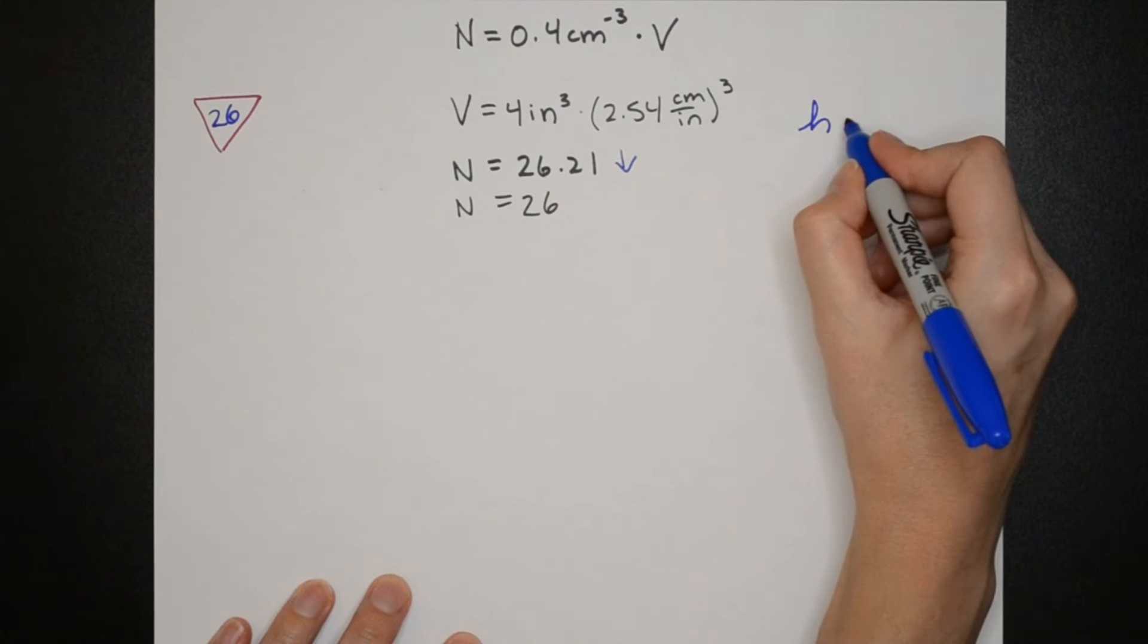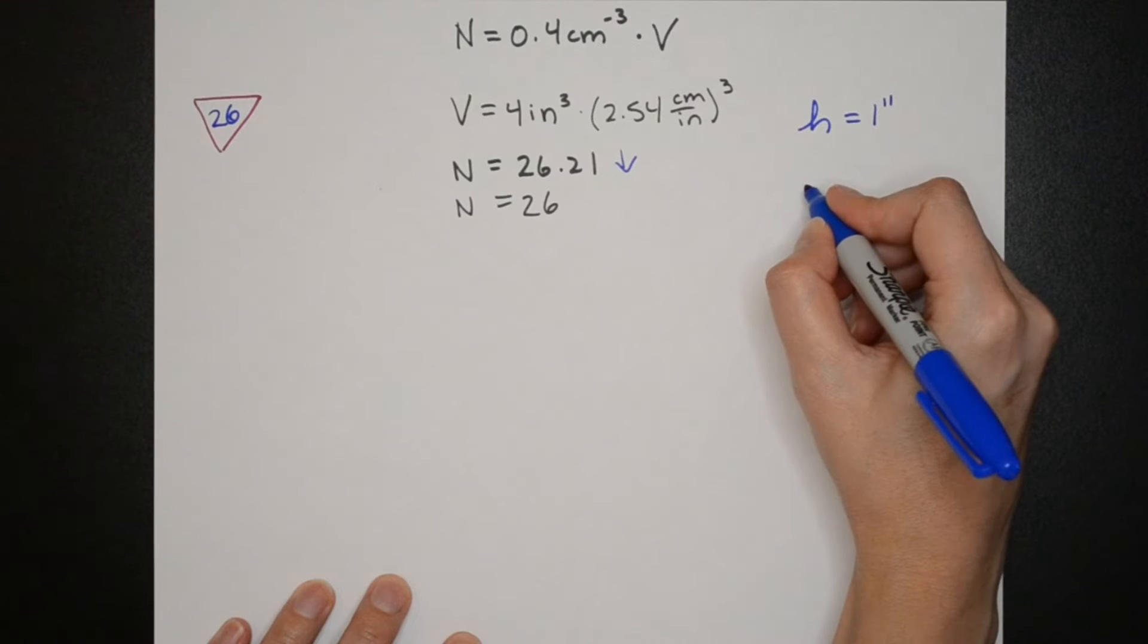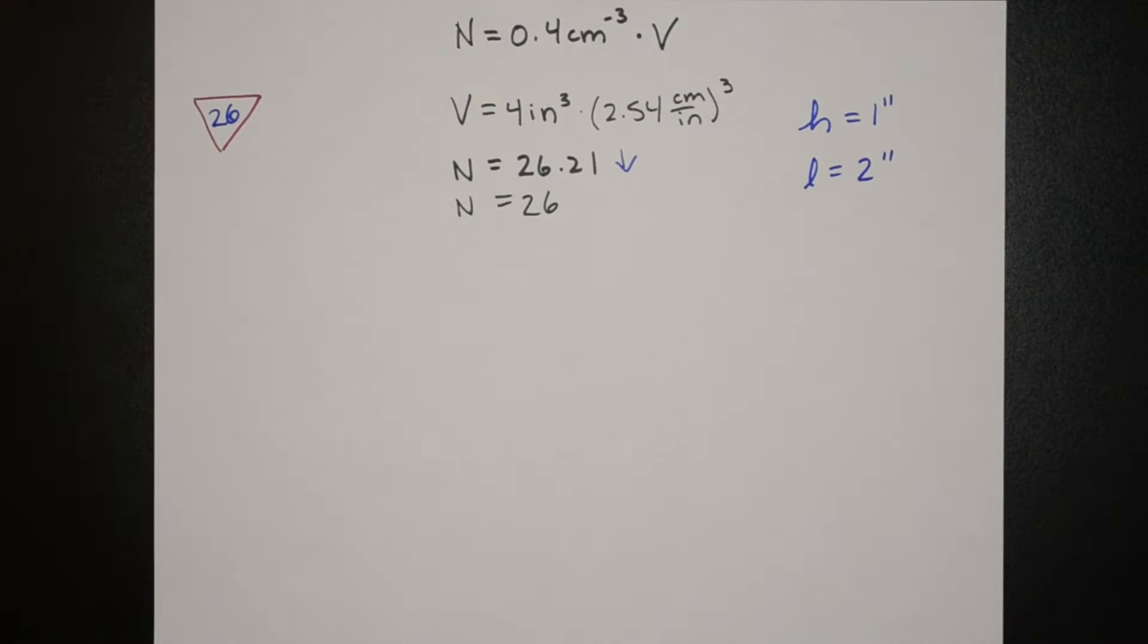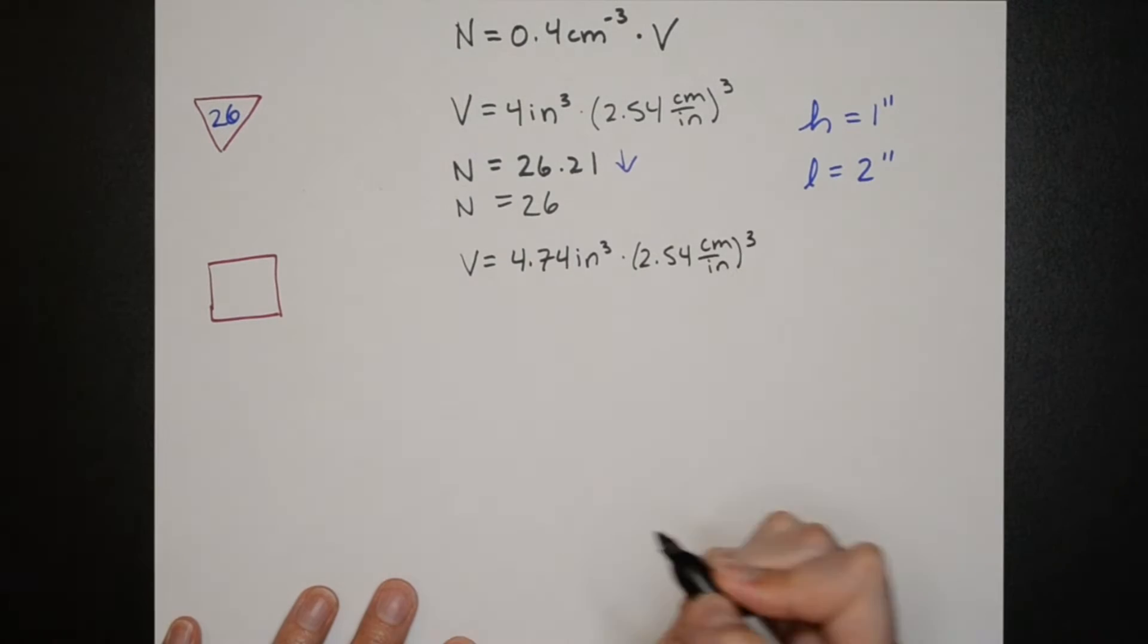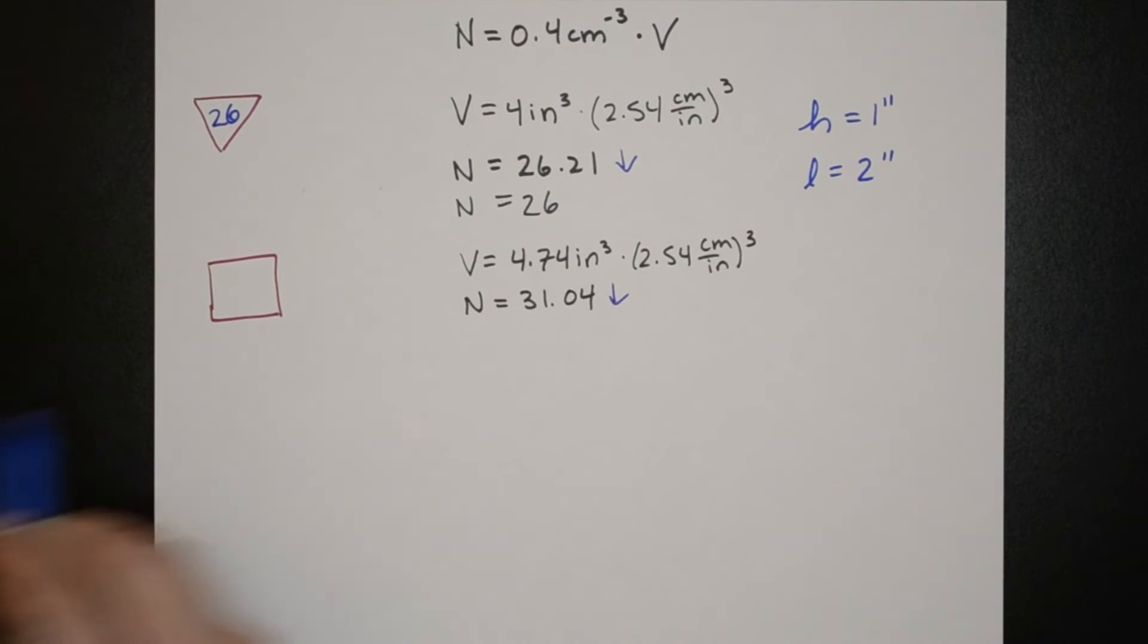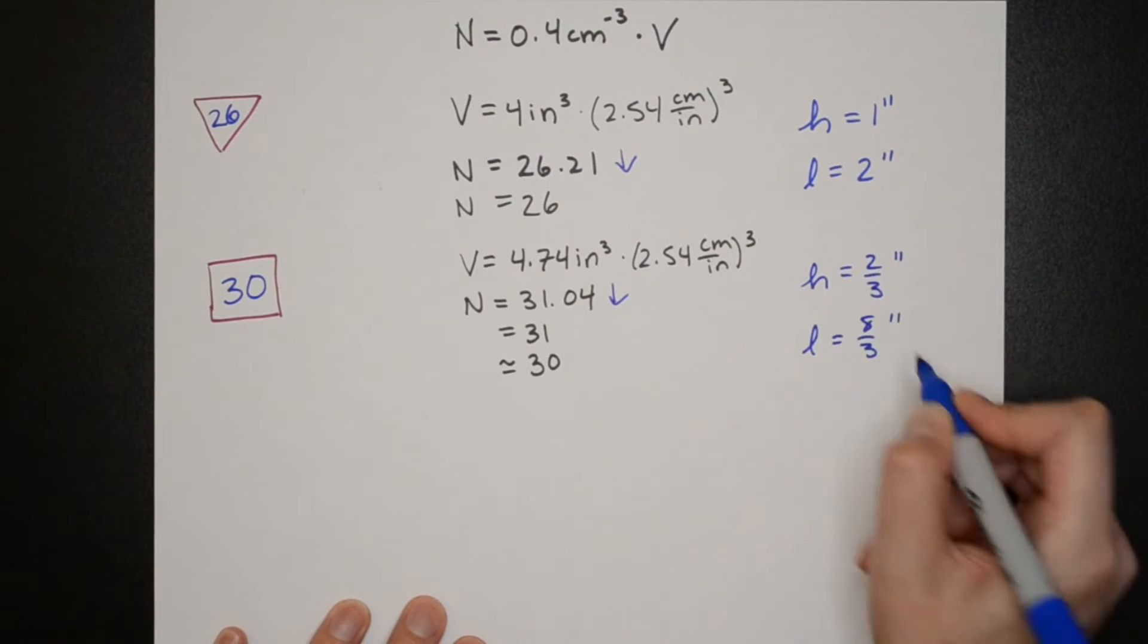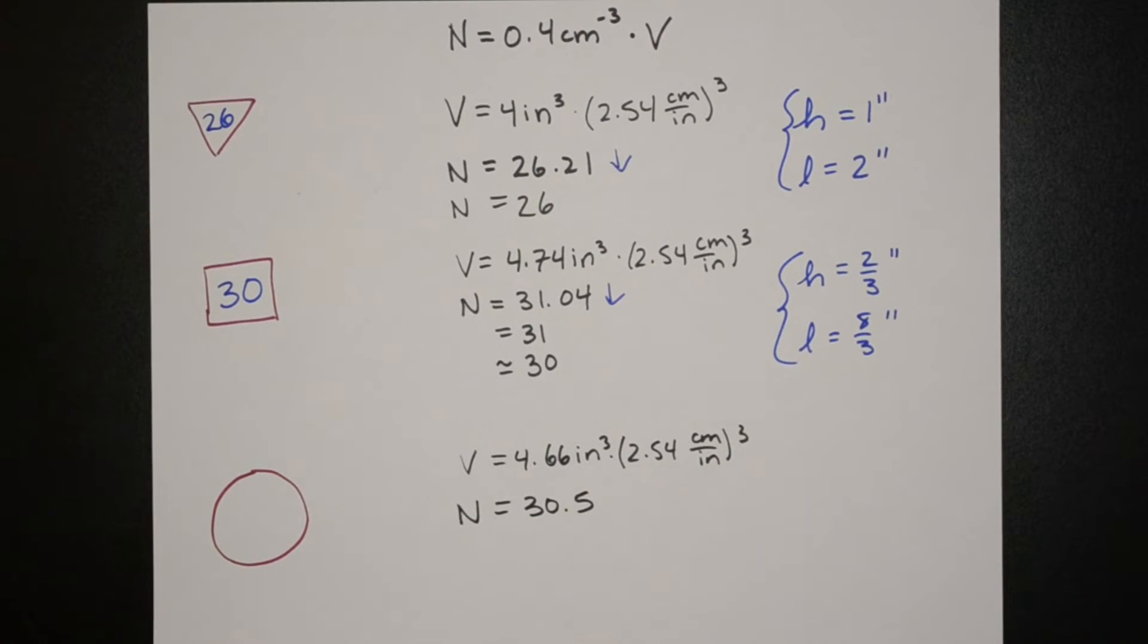On the right hand side here I'm going to put the dimensions for each shape so when we're ready to build we know what dimensions to use. The estimate for the number of pennies in the cube is 31 but that one's really close and so I'm guessing it's actually going to be one penny less. And then for the sphere we have an estimate of 30.